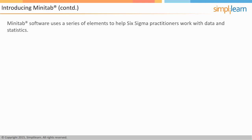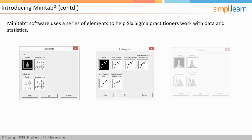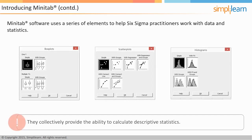Moreover, Minitab uses a series of elements to help Six Sigma practitioners work with data and statistics. These elements are box plots, scatter plots, and histograms. They collectively provide the ability to calculate descriptive statistics.